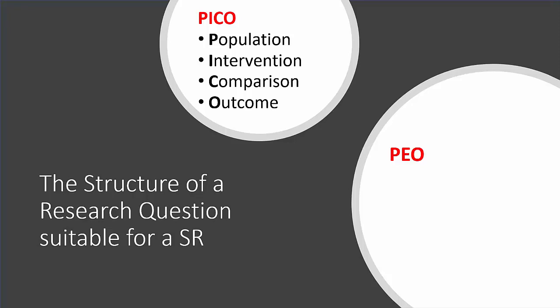For PEO — remember this is more used for qualitative research — P is the Population or patient or sometimes the problem of interest, E is the Exposure, e.g. what is the disorder or pre-existing difficulties of the client, and O is once again the Outcome.